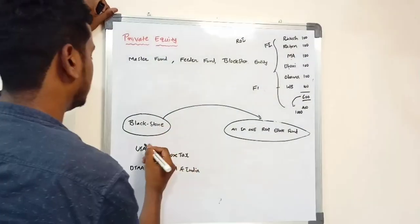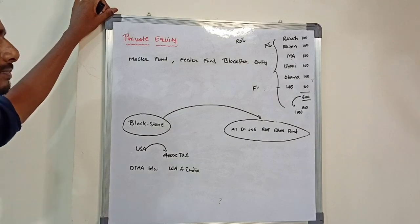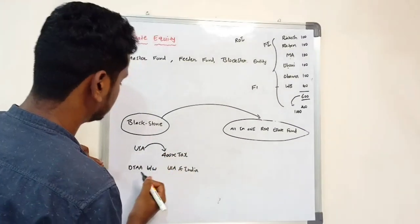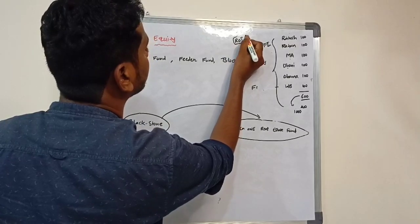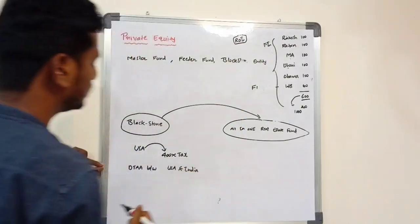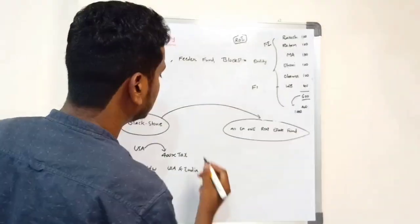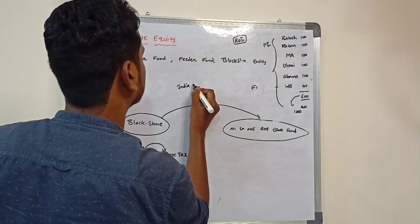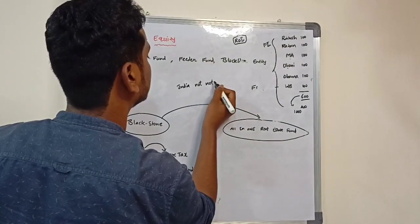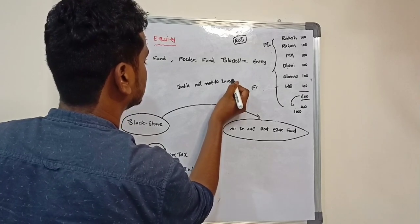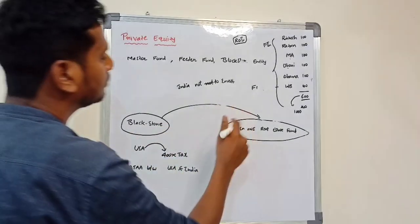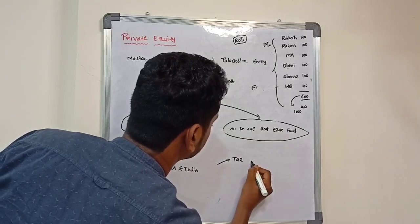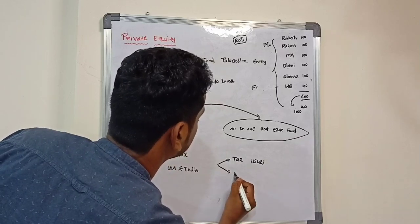As the fund is in America, the US government levies tax. And as the investors are residents of India, the Indian government also levies tax. So there is two times tax. Also, let us assume that the US government is prohibiting Indians from investing. So Blackstone, which wants to launch a fund, is facing two issues: one is tax issues, and the other is regulatory issues.